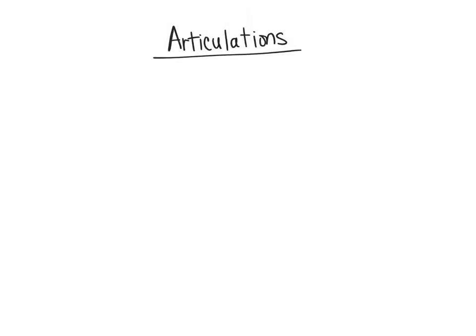We're going to talk a bit about articulations. Articulations are commonly thought of as the joints of the body — the areas where we're bending and moving bone by bone because of muscle contraction, which we'll talk about in the next section. We're going to cover three main categories of joints.